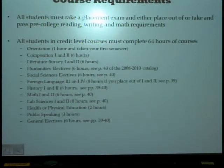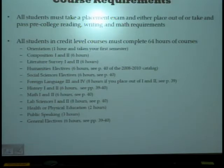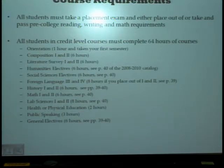Once you have either placed out of those pre-college courses or taken and passed them, students in this field will be required to take 64 hours of courses. The first is an orientation course — one hour, best taken your first semester. You'll take two composition and rhetoric courses, Composition 1 and Composition 2. You'll have a variety of literature survey courses to choose from, including American literature, English literature, world literature, African American literature, or women's literature.